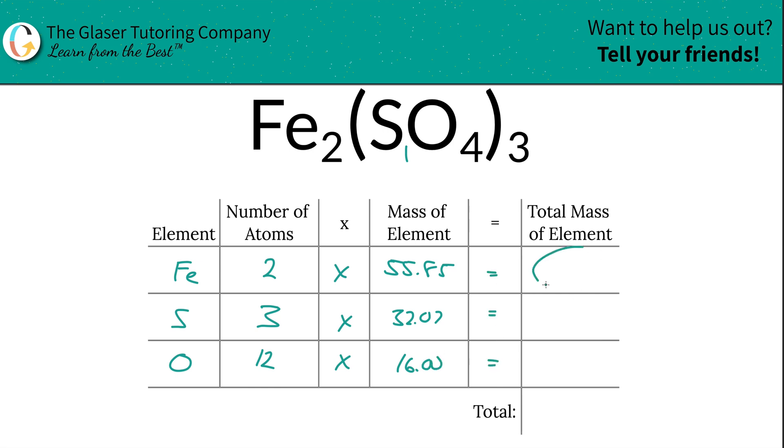Then to find the total mass of that element in the compound, we just have to simply multiply this row on across. So the total mass of iron here will be about 111.7. The total mass of sulfur then is going to be 96.21, and then the total mass of oxygen is going to be 192.